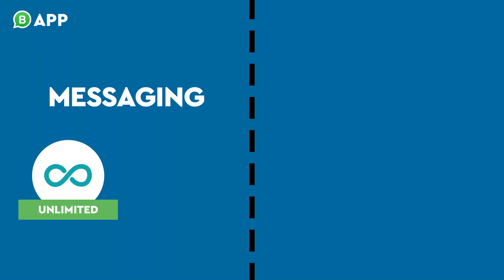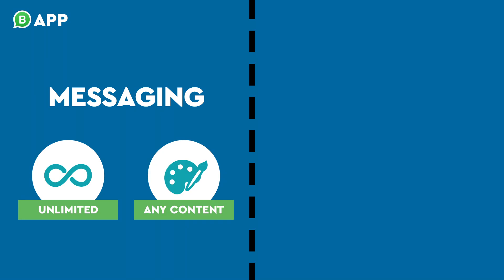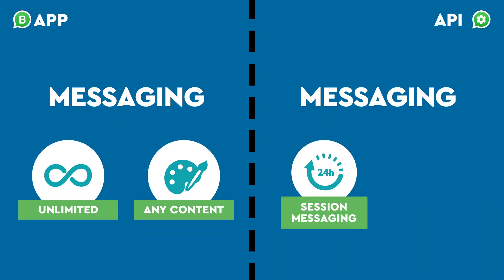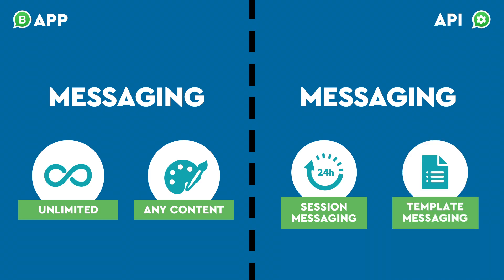The type of account you choose impacts the messages you can send. With the app, you can send an unlimited number of messages with total freedom over content, just like on a regular WhatsApp account. The API has restrictions on the types of messages you can send. Messages sent within 24 hours of a user's last message are called session messages. During this window, you can send any number of messages with no limitations on content. After 24 hours, only template messages are allowed, and any template message must first be submitted to WhatsApp for approval. WhatsApp will not approve your message template if it contains promotional content.